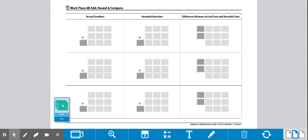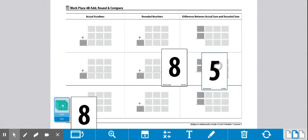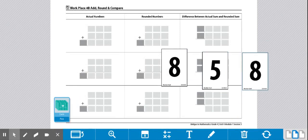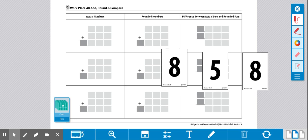So first I'm going to draw three cards. I have 8, 5, and 8 again. So I'm going to choose 858 as my first number.